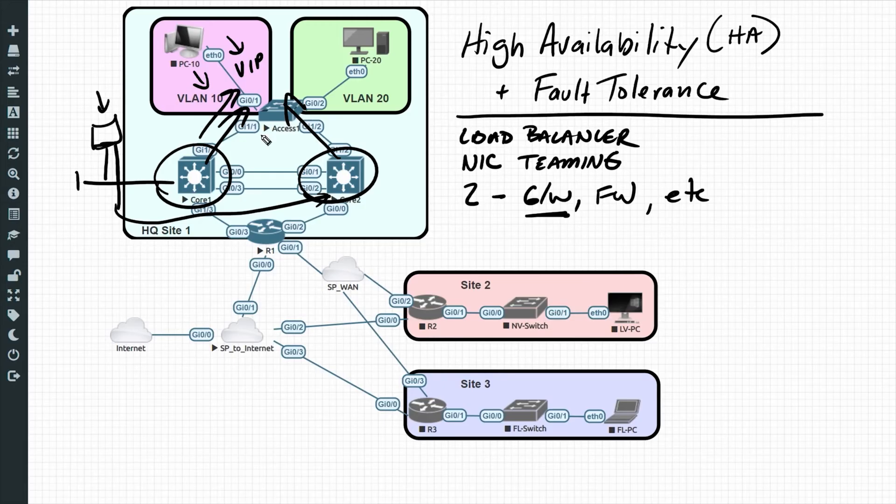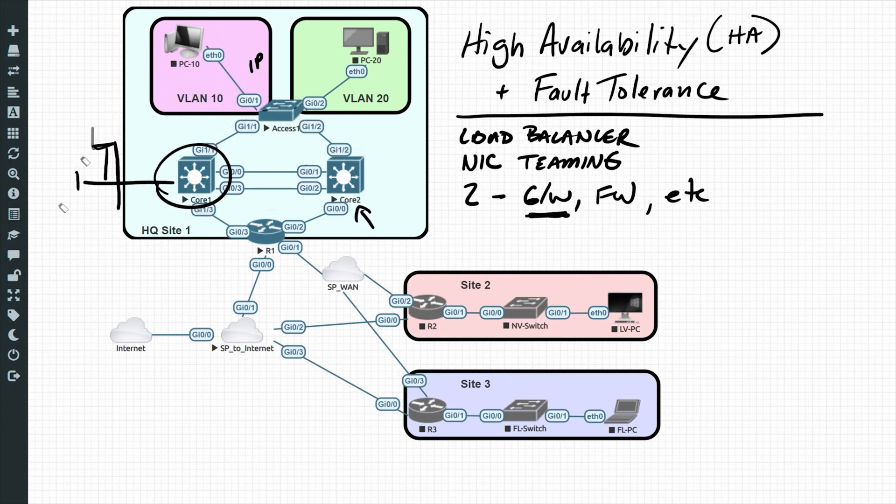Maybe core one says, I'll take responsibility for that default gateway address, this virtual IP address. And then core two says, cool, you do that. And if you go away, if I don't see you anymore, I'll take over responsibility. That way we can have some fault tolerance by using two routers with a first hop redundancy protocol to support the default gateway functionality for the client. In a video or two coming up, I'll go ahead and demonstrate an example of that as well.